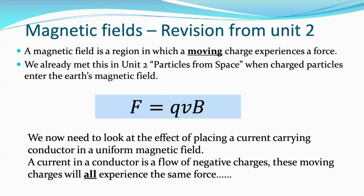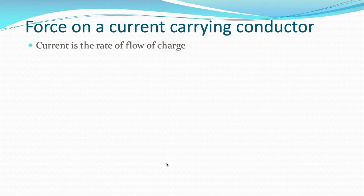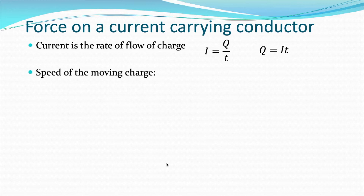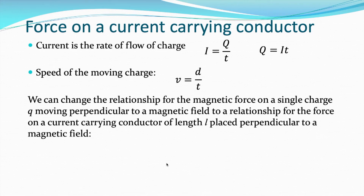Let's think about what current is. From third year, current is the rate of flow of charge: I equals Q over T — it's the number of coulombs per second that pass a point. If we rearrange that, Q equals I times T. And if we think about velocity — the speed of our moving charge — speed equals distance over time. We can then change our relationship for the magnetic force on a single charge Q moving perpendicular to a magnetic field, to a relationship for the force acting on a current in a conductor of length L placed perpendicular to a magnetic field.